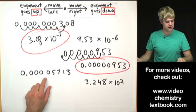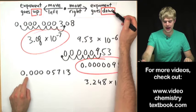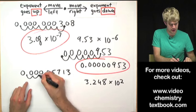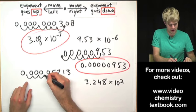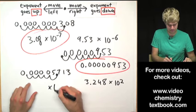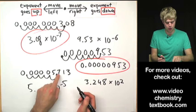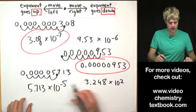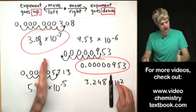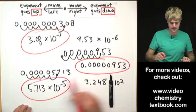Putting this number into scientific notation: decimal place is here, move to the right so the exponent goes down, starting at 10 to the zero, then negative one, negative two, negative three, negative four, negative five. The coefficient is 5.713. We don't keep the leading zeros on the left-hand side. That's the final answer.